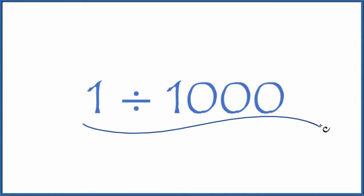Let's divide 1 by 1,000. First off, let's consider this as a fraction, because 1 divided by 1,000 is the same as 1 over 1,000.